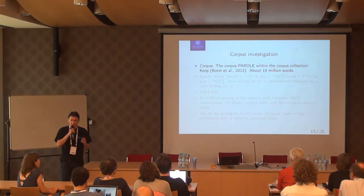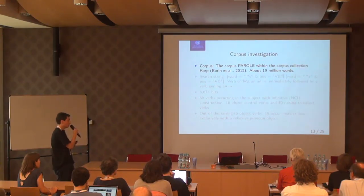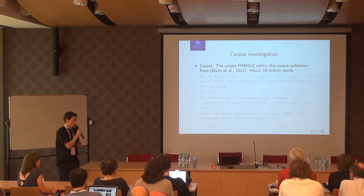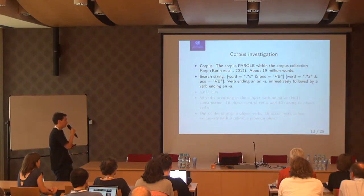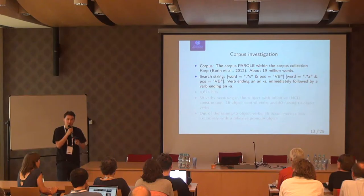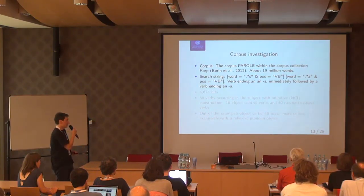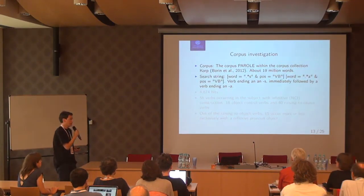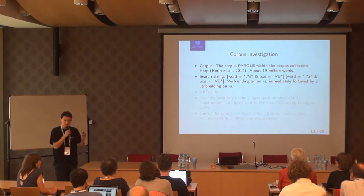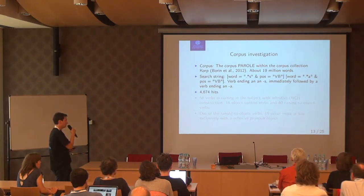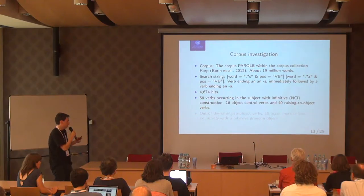In order to investigate raising-to-subject with passive predicates in Swedish, I made a small corpus investigation using the corpus Parole within the corpus collection Korp, made available by the University of Gothenburg. I searched for verbs ending in an -s immediately followed by verbs ending in an -a. Of course that doesn't capture all possibilities — infinitives sometimes end in other things than -a — but it still gives a good idea about the restrictions on this construction. This yielded 4,674 hits, and I found 56 verbs occurring in the S-passive plus infinitive structure.